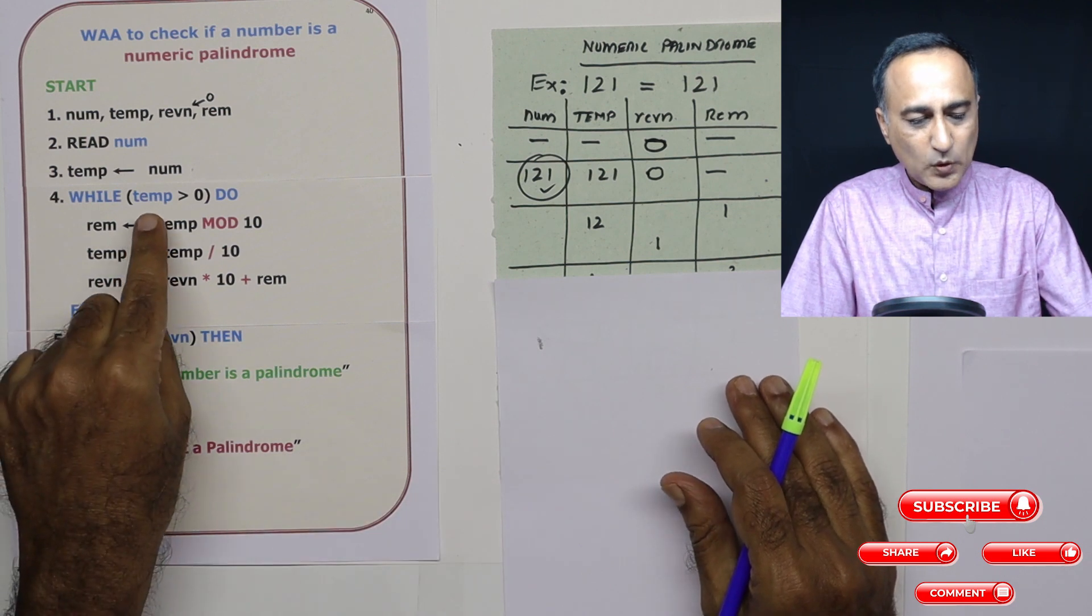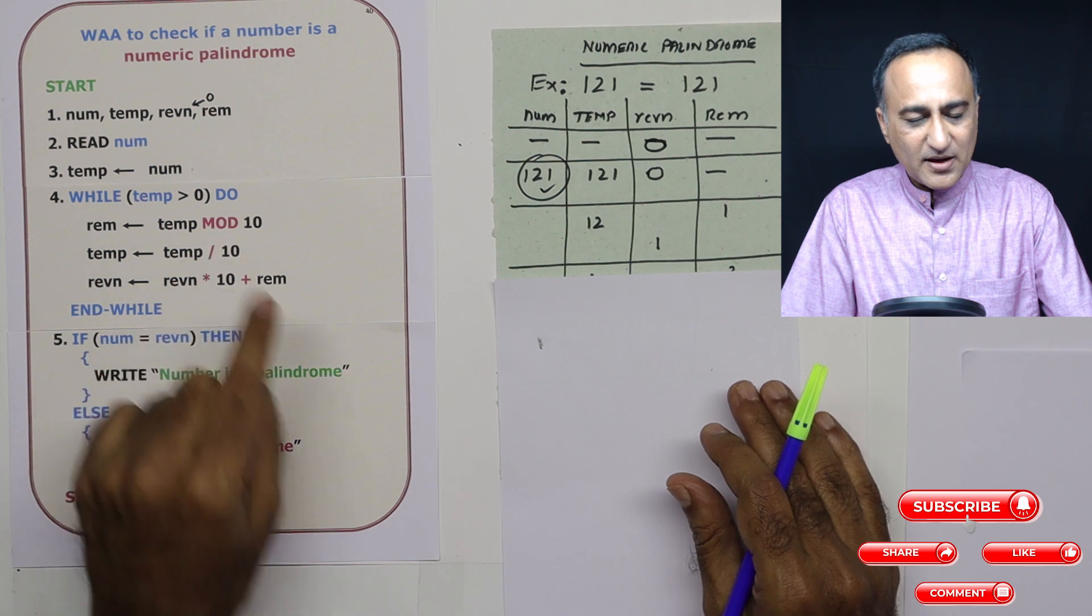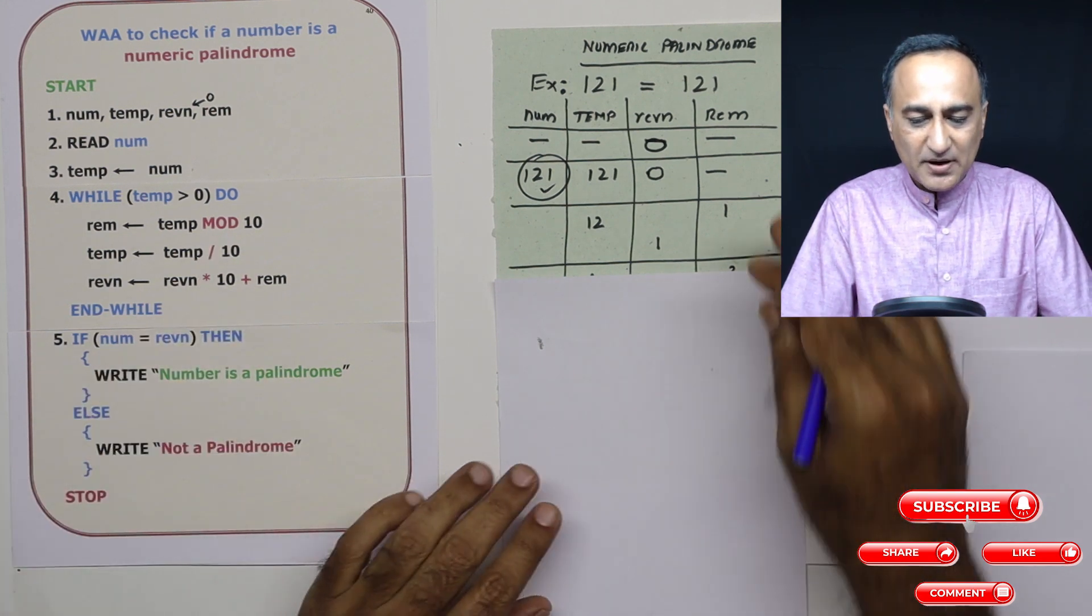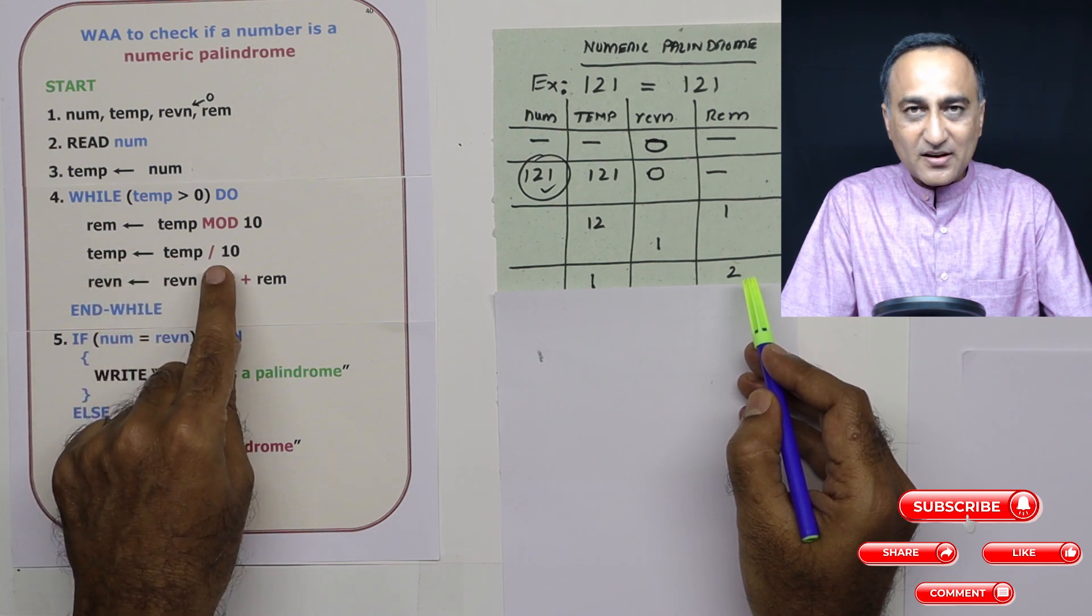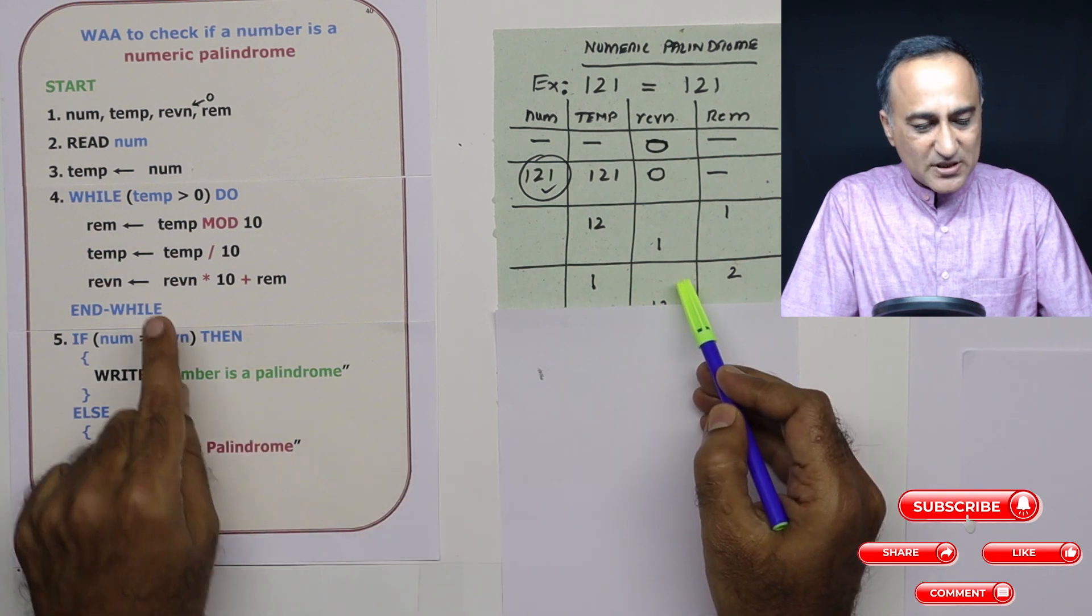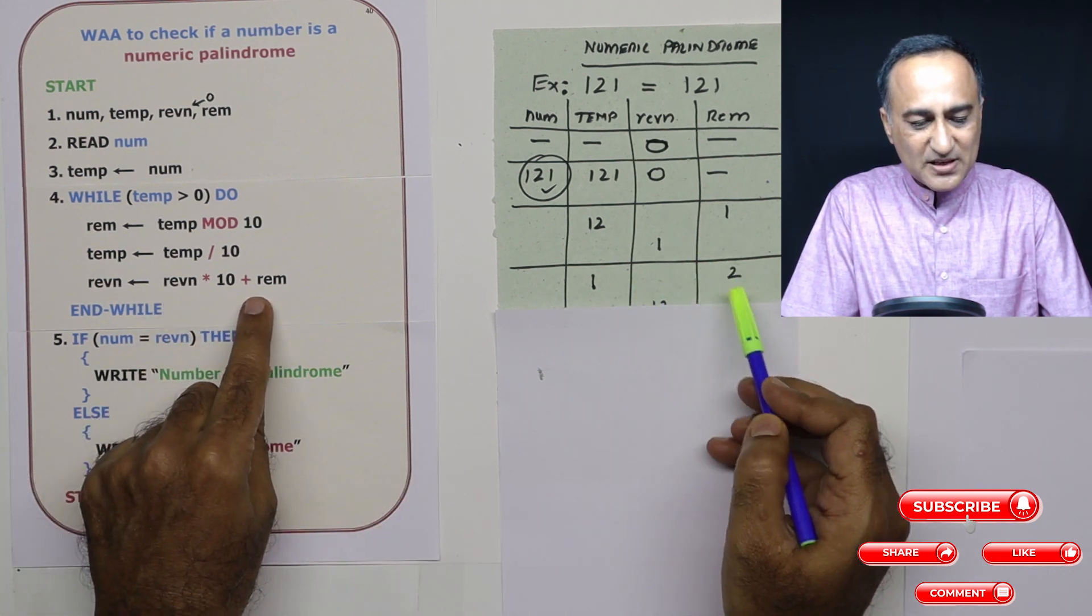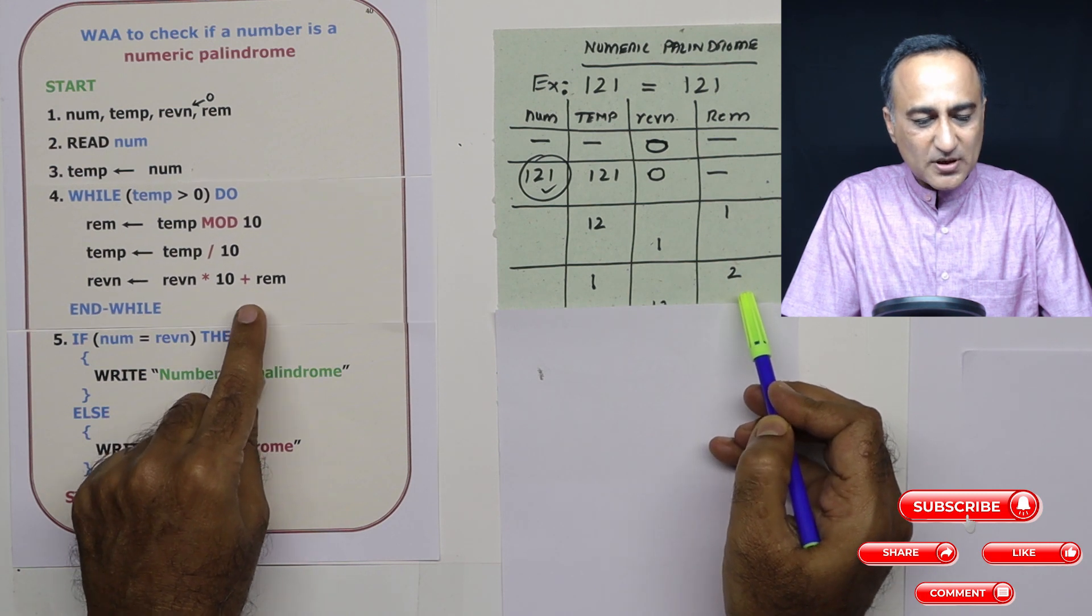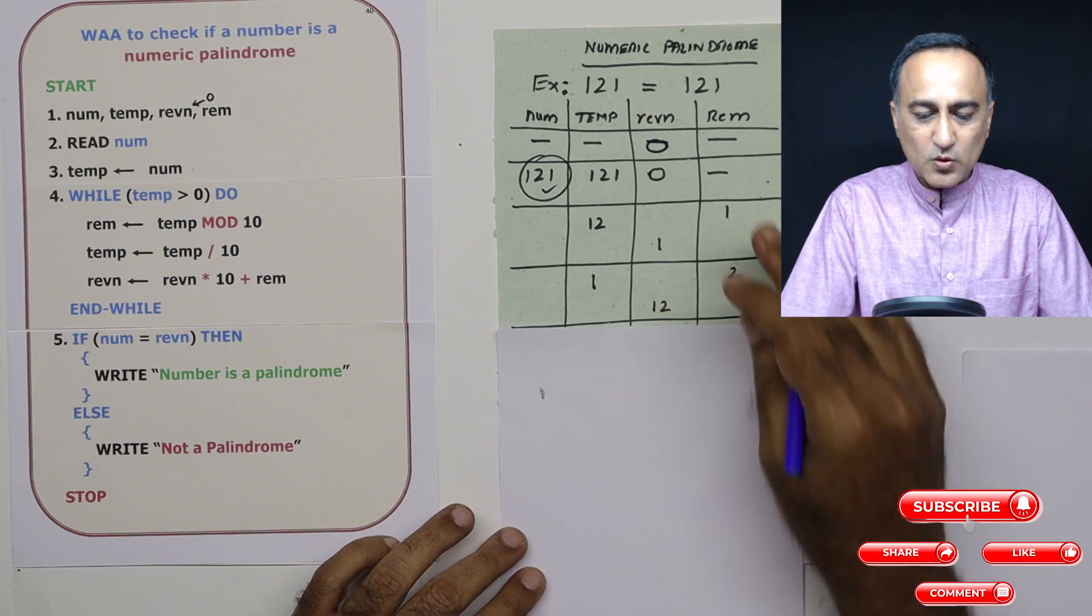Now we come back. 12 is greater than zero. Yes. 12 mod 10, the remainder is 2. So remainder becomes 2. Then temp is 12 divided by 10. Quotient is 1. So temp now becomes 1. Reverse number was 1. 1 times 10 is 10 plus the new remainder 2. So it's become 12. Now reverse number has become 12.